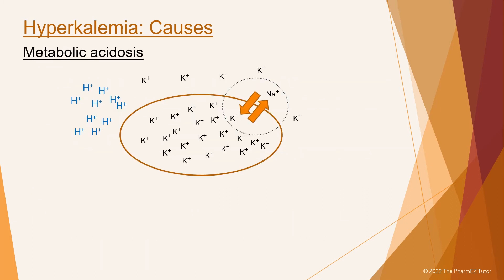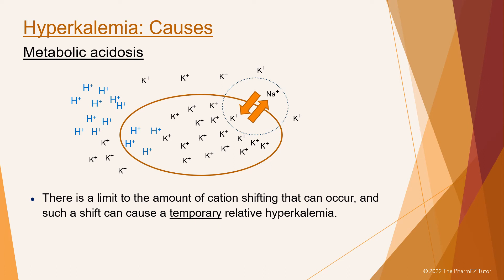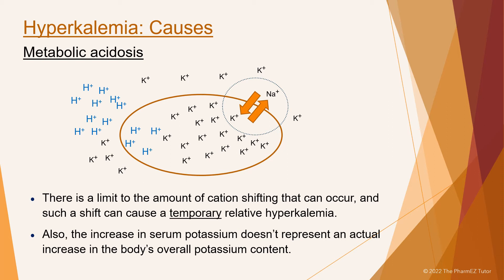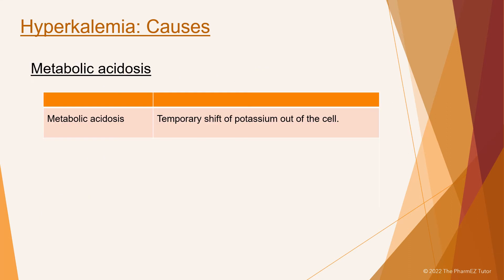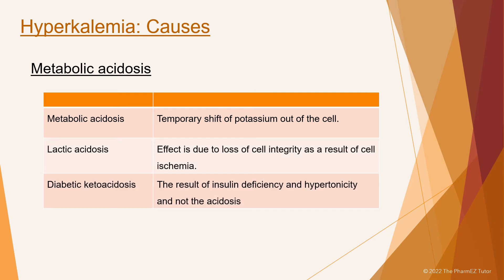In metabolic acidosis, excess hydrogen ions in the extracellular fluid increase and move into cells, pushing potassium ions out of the cell into the extracellular fluid. For each hydrogen ion that enters the cell, one potassium ion leaves in order to maintain electroneutrality. This acidosis can cause hyperkalemia. There is a limit to the amount of cation shifting that can occur, and such a shift can cause a temporary relative hyperkalemia. The increase in serum potassium does not represent an actual increase in the body's overall potassium content. Lactic acidosis is often associated with potassium shift, but this effect is due to loss of cell integrity as a result of cell ischemia. Hyperkalemia in diabetic ketoacidosis is the result of insulin deficiency and hypertonicity, and not the acidosis.